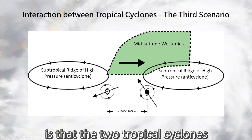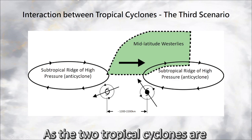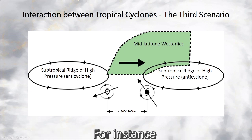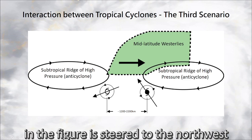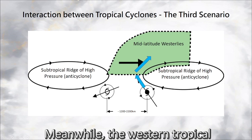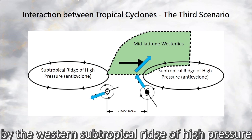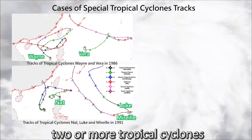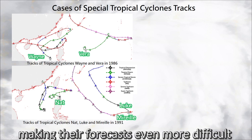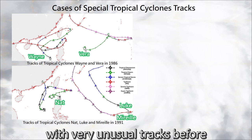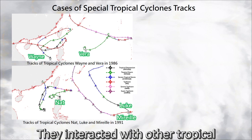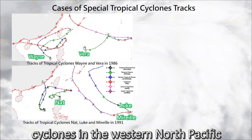The third scenario is that the two tropical cyclones only show a semi-direct interaction. As the two tropical cyclones are relatively far away from each other, their moving tracks are mainly influenced by the steering flow of other synoptic-scale weather systems. For instance, the eastern tropical cyclone in the figure is steered to the northwest by the eastern subtropical ridge of high pressure and enters the mid-latitude westerlies, while the western tropical cyclone is steered to the southwest by the western subtropical ridge. Whenever there are interactions between two or more tropical cyclones, superimposed on the steering flow of other synoptic environments, their tracks will become rather complex. There have been cases with very unusual tracks, such as tropical cyclone Wayne in 1986 and tropical cyclone Nat in 1991, which interacted with other tropical cyclones in the western North Pacific and necessitated the hoisting of tropical cyclone warning signals by the observatory on three occasions.